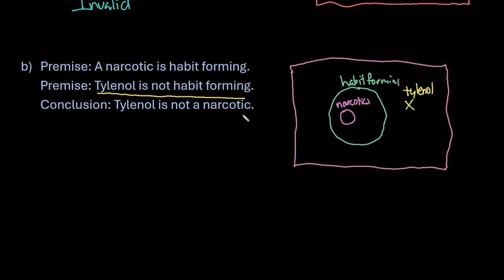The conclusion — Tylenol is not a narcotic — since Tylenol has to be outside of the habit forming circle, this would be a valid argument. Since Tylenol cannot be inside the circle of things that are habit forming, it cannot be inside of narcotics, and since all narcotics are habit forming, they fall inside the circle.